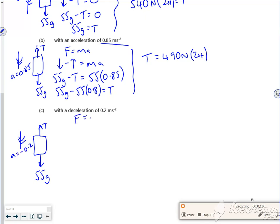With a deceleration of 0.2 m/s², my acceleration is -0.2. F = ma: force in the direction of travel minus force opposing equals mass times acceleration. 55g - T = 55(-0.2). So T = 55g - 55(-0.2), which means it's going to be a plus there now. T = 55g + 55(0.2).